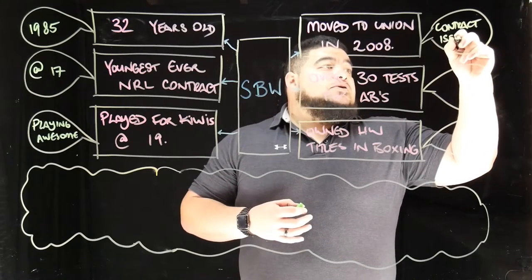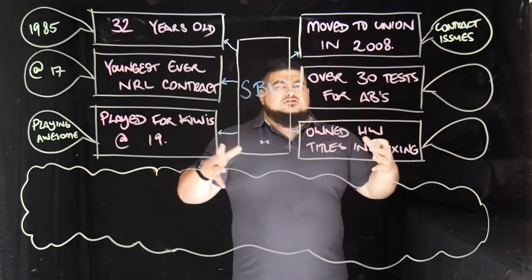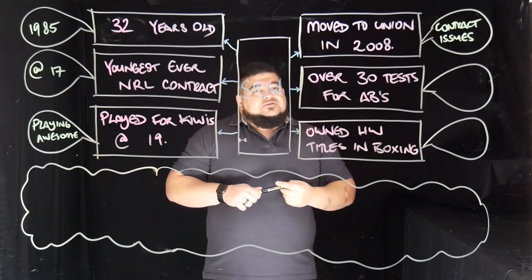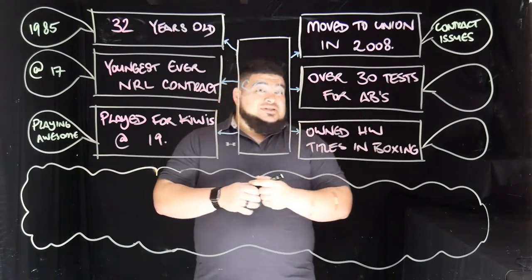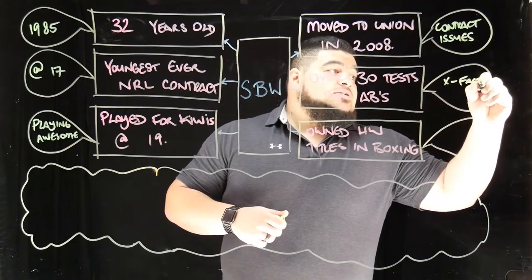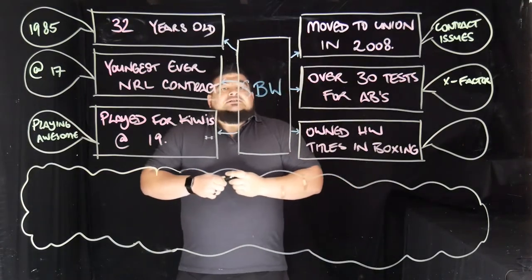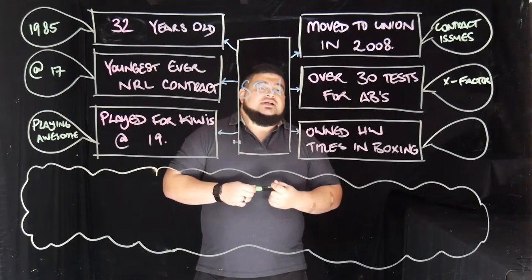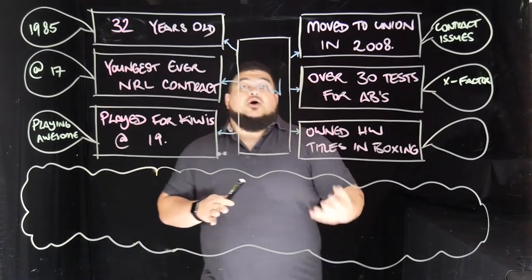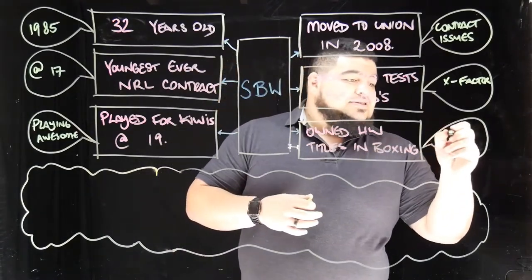They'd signed him on a rookie's salary even though he was very good, and he felt he was worth more than that. He's played over 30 tests for the All Blacks because he's got a lot of X-factor — great offloading ability and solid defence when he uses his arms. He owned multiple heavyweight boxing titles but had to give them up because of inactivity — and he's obviously a decent boxer.